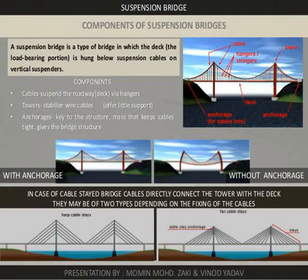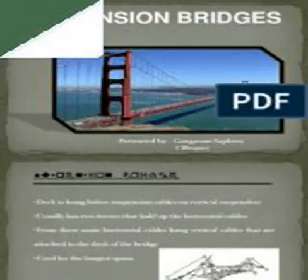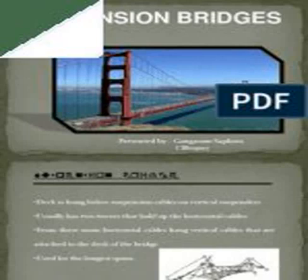The Marlow Suspension Bridge was designed by William Tierney Clark and was built between 1829 and 1832, replacing a wooden bridge further downstream which collapsed in 1828. It is the only suspension bridge across the non-tidal Thames. The Széchenyi Chain Bridge, spanning the River Danube in Budapest, was also designed by William Clark, and it is a larger-scale version of Marlow Bridge. An interesting variation is Thornewill and Warham's ferry bridge in Burton-on-Trent, Staffordshire.